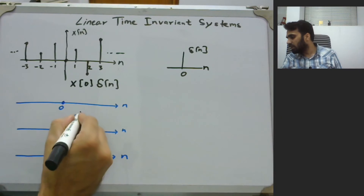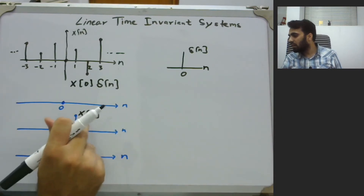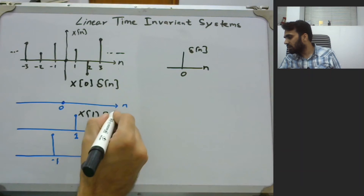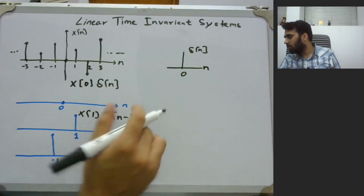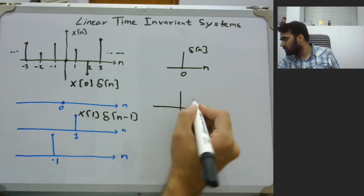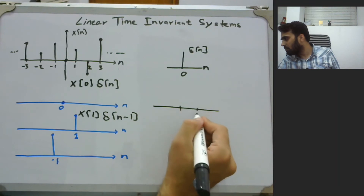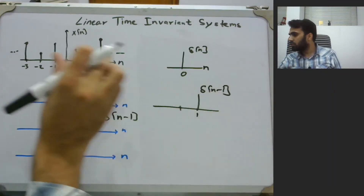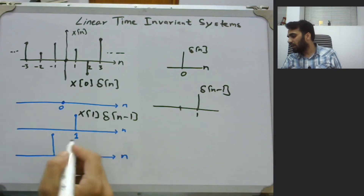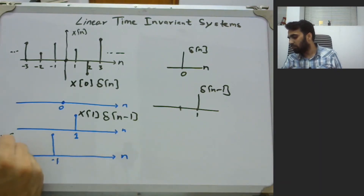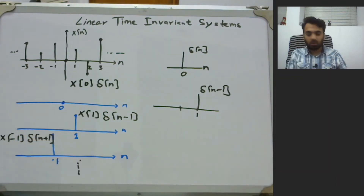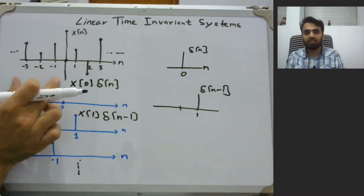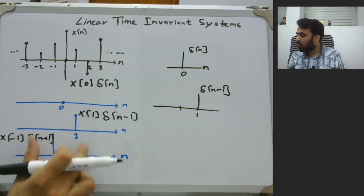Similarly, the value x(1) is extracted by a shifted impulse δ(n-1), which places an impulse at n=1 rather than n=0. Multiplying x(n) by δ(n-1) gives x(1)·δ(n-1). Likewise, x(-1) is extracted using δ(n+1), giving x(-1)·δ(n+1). What we have done is expressed the discrete time signal x(n) as a sum of shifted impulses.